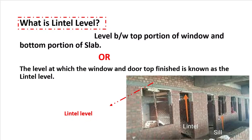So let's talk about the lintel level. Lintel level is the level at which the window and door top finishing is located — that is called the lintel level. As you can see in this picture, the top finishing of both these windows and the door is similar and at the same level. So this is the level at which both windows and doors are finished, and that is called the lintel level.